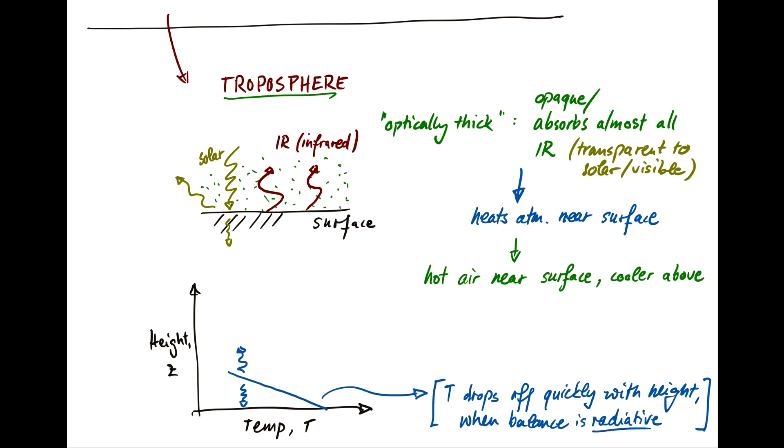So in this case, T drops off quickly with height when the balance is radiative. But that's not actually the case in the troposphere, because the hot air rises and the cool air drops down. As a result, your temperature profile is less steep. In reality, it would look more like this. You have a convective equilibrium because cool air sinks, warm air rises, and you have a less quick drop.